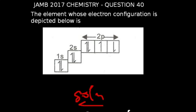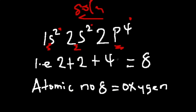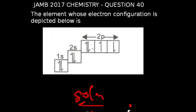Question 40 of the JAM 2017 chemistry exams: the element whose electron configuration is depicted by the orbital diagram. Rewriting this configuration gives 1s²2s²2p⁴ — two arrows in the 1s box, two in the 2s box, two paired in one 2p box, and one each in the remaining two 2p boxes. Adding the powers: 2 + 2 + 4 = 8. The element with atomic number 8 is oxygen. Therefore, the electron configuration depicted is that of oxygen.